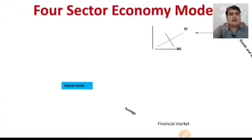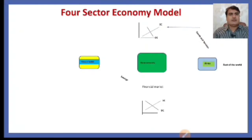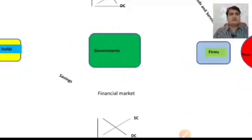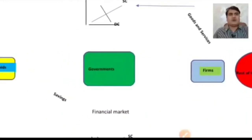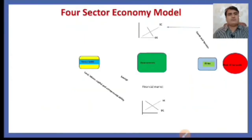In the four-sector model, we have the household, the firm, the government sector, the financial market, and the rest of the world. Under the two-sector economy there were two economic agents — the household and the firm. Under the three-sector economy, government was introduced. Under the four-sector economy, the rest of the world is included. Resources are transferred from households through the resource market towards the firms.